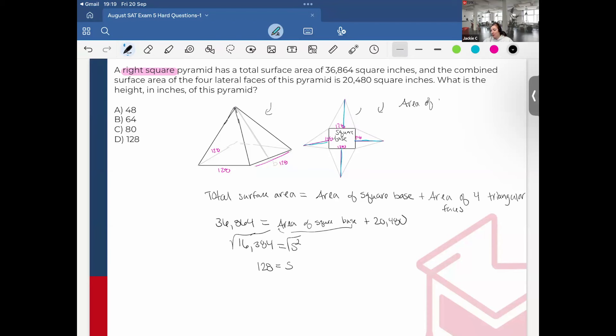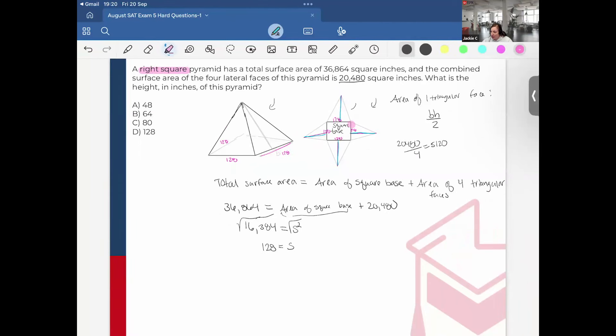Our next mission is that I want to find the slant height, and the slant height would be what I drew here in purple, the height of each of the four lateral faces. I can do that pretty easily because I know that the area of one triangular face will be base times height divided by 2. I have the knowledge of the four triangular lateral faces. If I wanted to get the area of one triangular face I would do 20,480 divided by 4. That gives me 5,120.